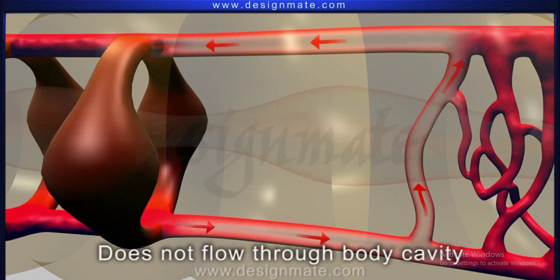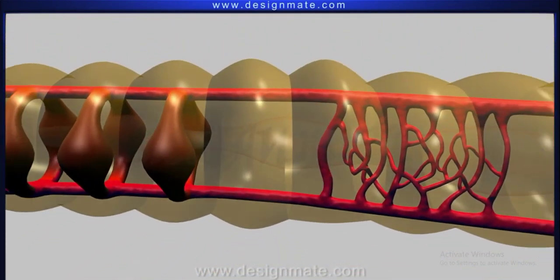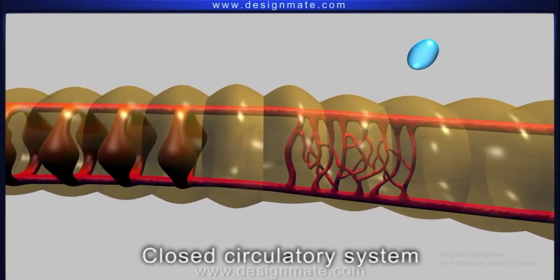Blood does not flow through the body cavity. Hence, we can say that the earthworm has a closed circulatory system.